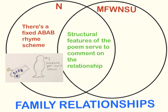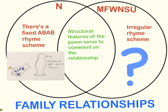A similarity I'm going to forge here is that in both poems, structural features serve to comment on the relationship. In Nettles there's a fixed ABAB rhyme scheme. What this fixed structure conveys is a sense of inevitability — the pain this boy's going to feel in life, the wounds physical and emotional that life will bestow on him. A fixed rhyme scheme reflects the fixed certainty that he's going to hurt in the future. However, in de Kock's poem there is an irregular rhyme scheme. This conveys a sense of uncertainty — she's unclear of her father's feelings for her, unclear of how she feels about her father. The irregular rhyme scheme captures that confusion and absence of certainty.